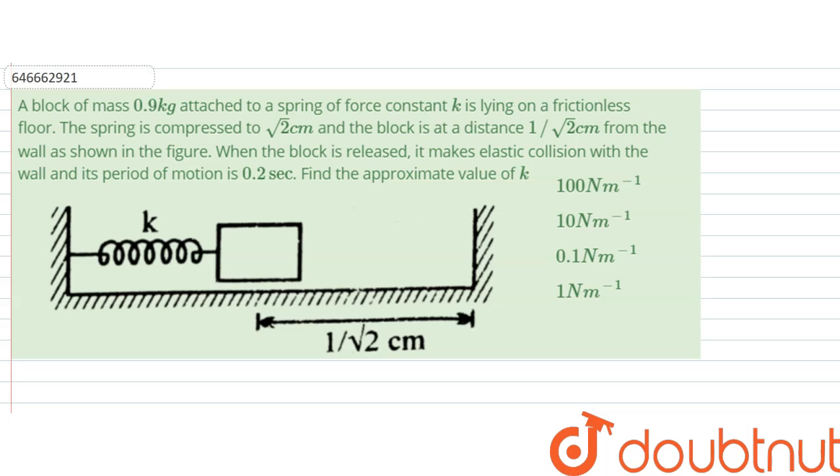Hello, we are given a question that says a block of mass 0.9 kg attached to a spring of force constant k is lying on a frictionless floor. The spring is compressed to root 2 cm and the block is at a distance 1 by root 2 cm from the wall as shown in the figure.